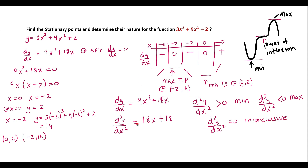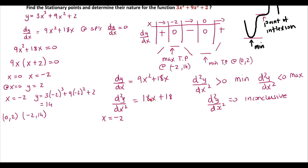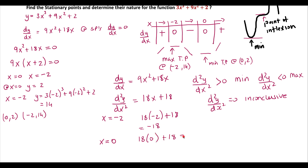Let's check this. At x = −2: 18(−2) + 18 = −18. Since the second derivative is less than 0, it's a maximum — which matches what we found. At x = 0: 18(0) + 18 = 18. Since the second derivative is greater than 0, it's a minimum — and that matches as well.